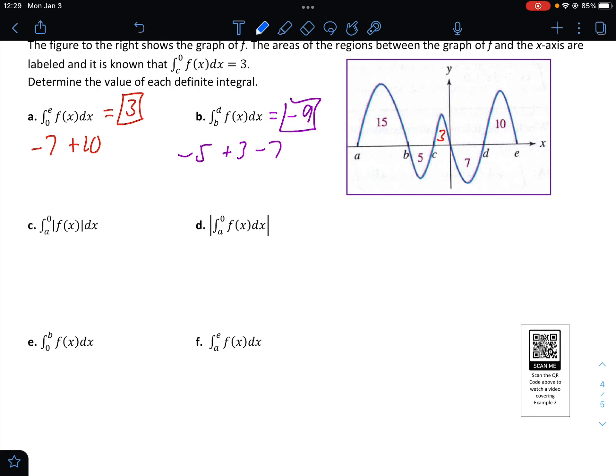From a to 0, the absolute value of f. So from a to 0, the absolute value of f. So really, we're thinking of f as this here, 15, 5, and 3. Which would be 23.